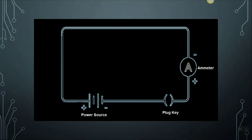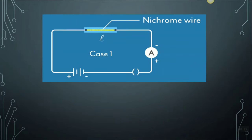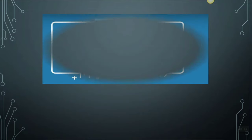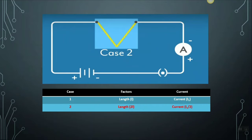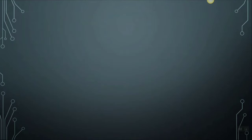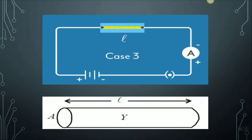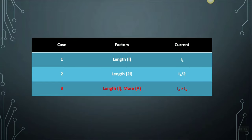Take a small electric circuit which has a plug key, a power source, and an ammeter. In the first case, connect the nichrome wire between two points in the circuit and let the length of this wire be small L. Plug the key and measure the reading in the ammeter. In the second case, double the length of the wire but keep the thickness the same. You will notice that the current is half of the original — that is, when the length is doubled, the current flowing through it will be half. In the third case, replace the wire with a thicker nichrome wire of the same length L, increasing the cross-sectional area A. You will notice that the current is more than the original current I1.